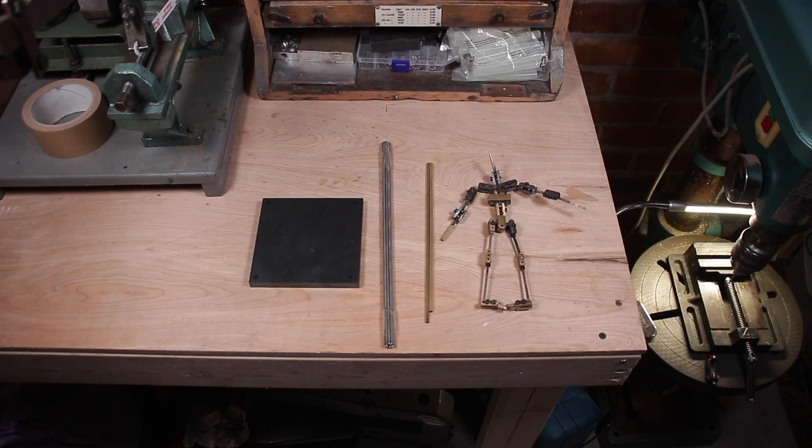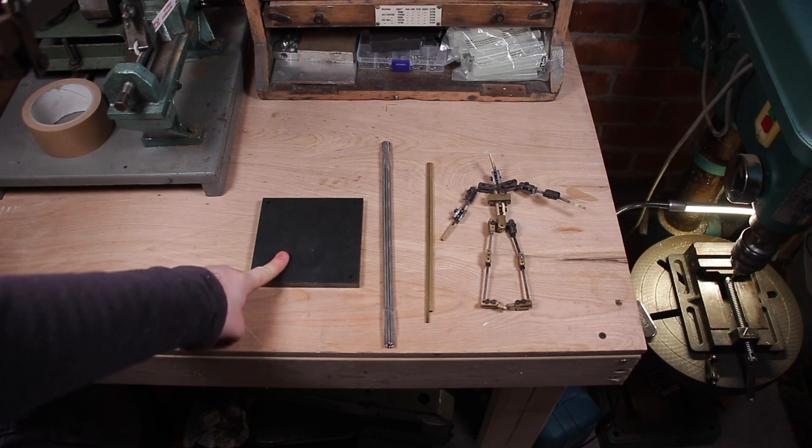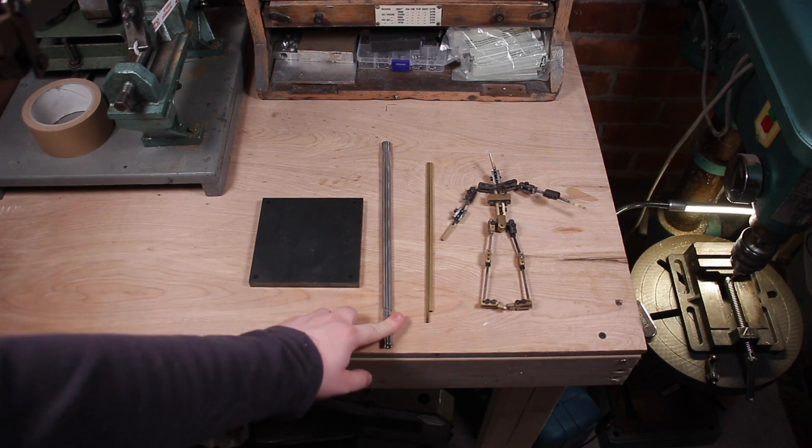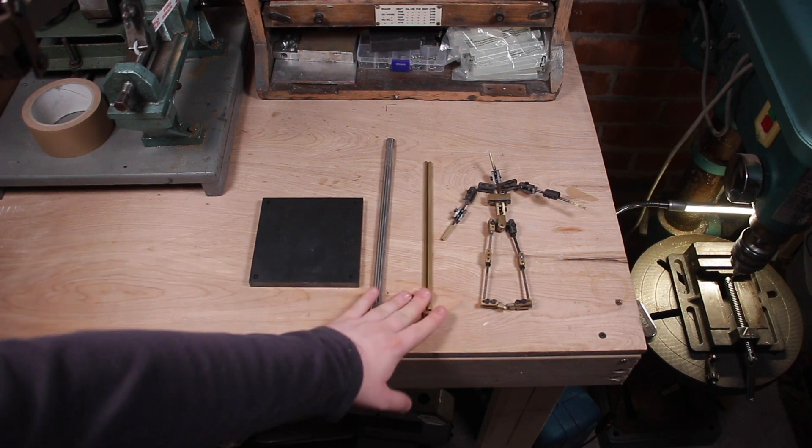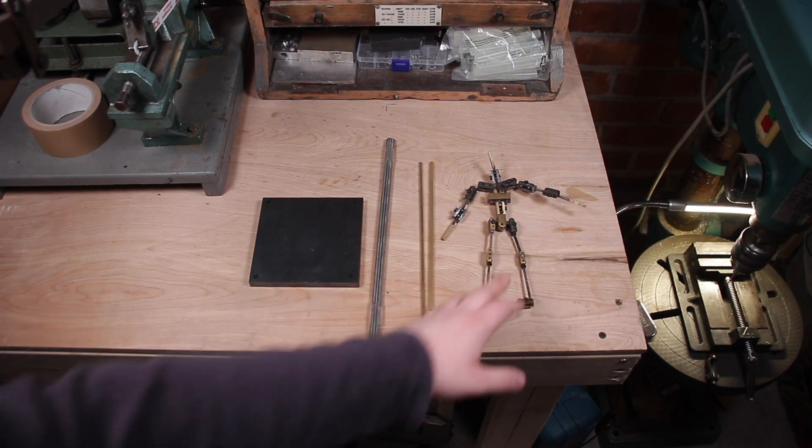Hello, and today we're making a rig. We're going to be using this steel base plate, these M3 rods, interlocking brass tubes, and I'm going to use the joints from my armature.